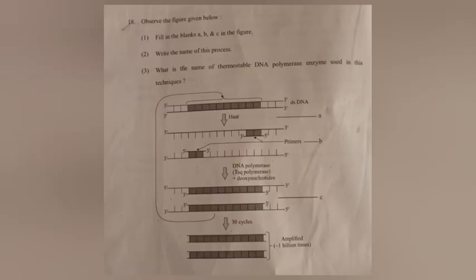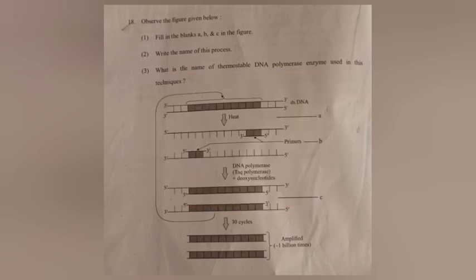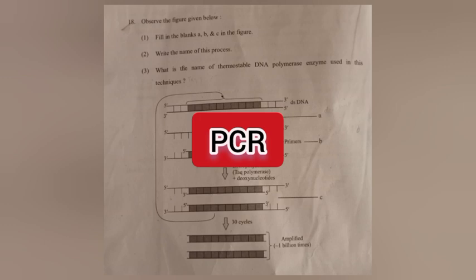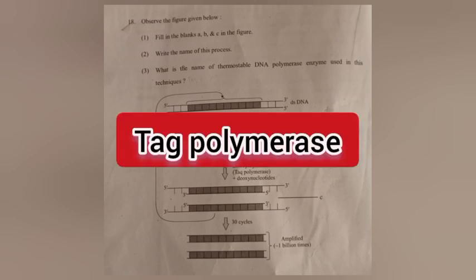Question 18: Observe the figure given below. 1) Fill in the blanks A, B, and C. Answer: A — denaturation; B — annealing; C — extension. 2) Write the name of this process. Answer: PCR — Polymerase Chain Reaction. 3) What is the name of the thermostable DNA polymerase used in this technique? Answer: Taq polymerase.